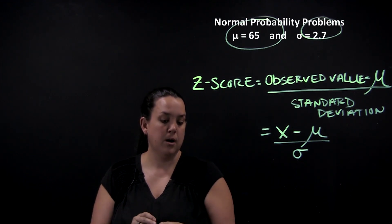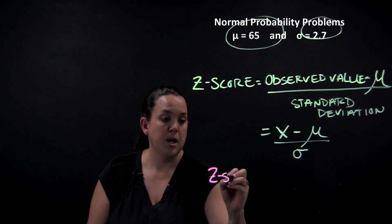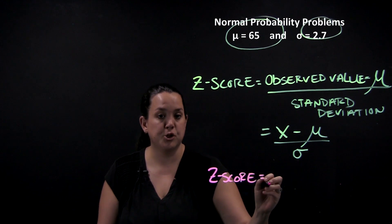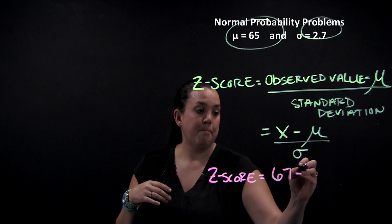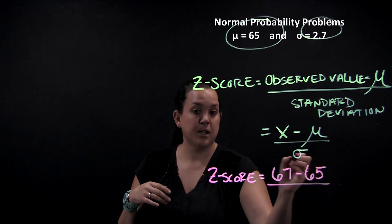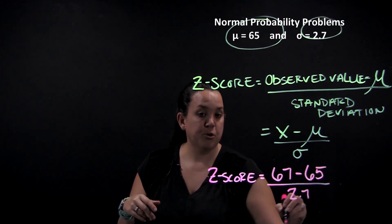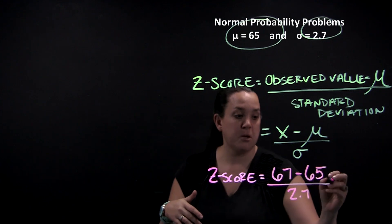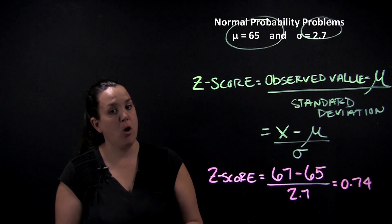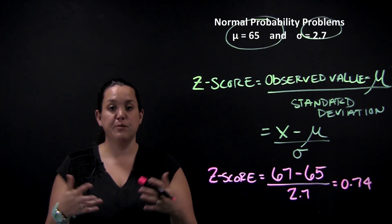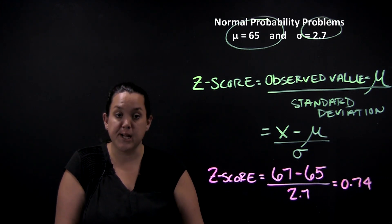Let's say I'm in the college-age female group. My height is 67 inches, so I would be the observed value. My z-score is: 67 minus mu (which is 65) — that gives me the distance and direction from the mean — divided by 2.7. My z-score is 0.74, which means I am 0.74 standard deviations above the mean. A z-score allows you to be precise in terms of how far from the mean you are in units of standard deviation.